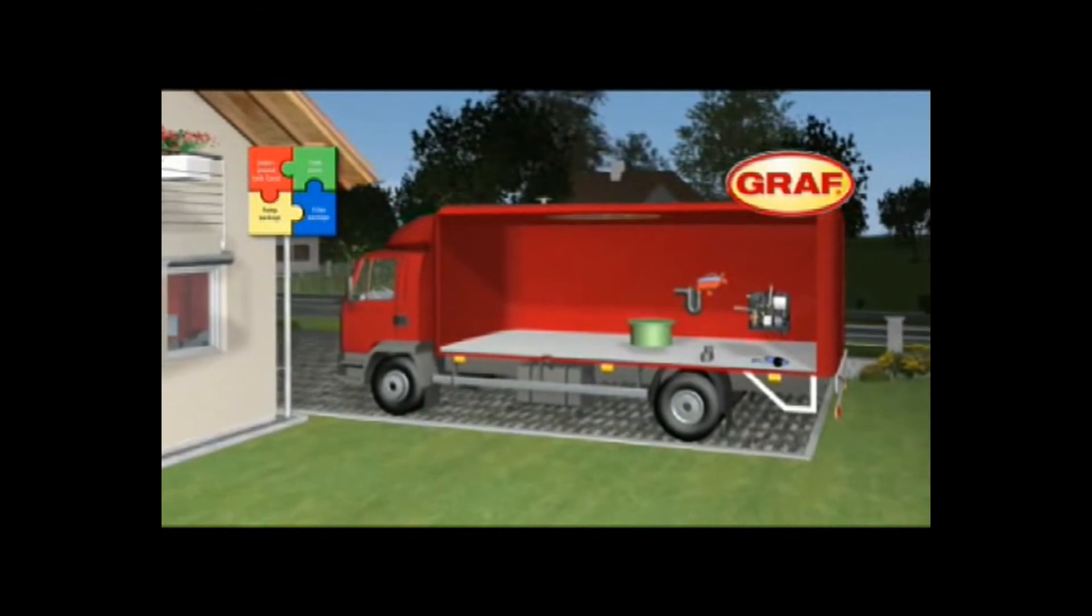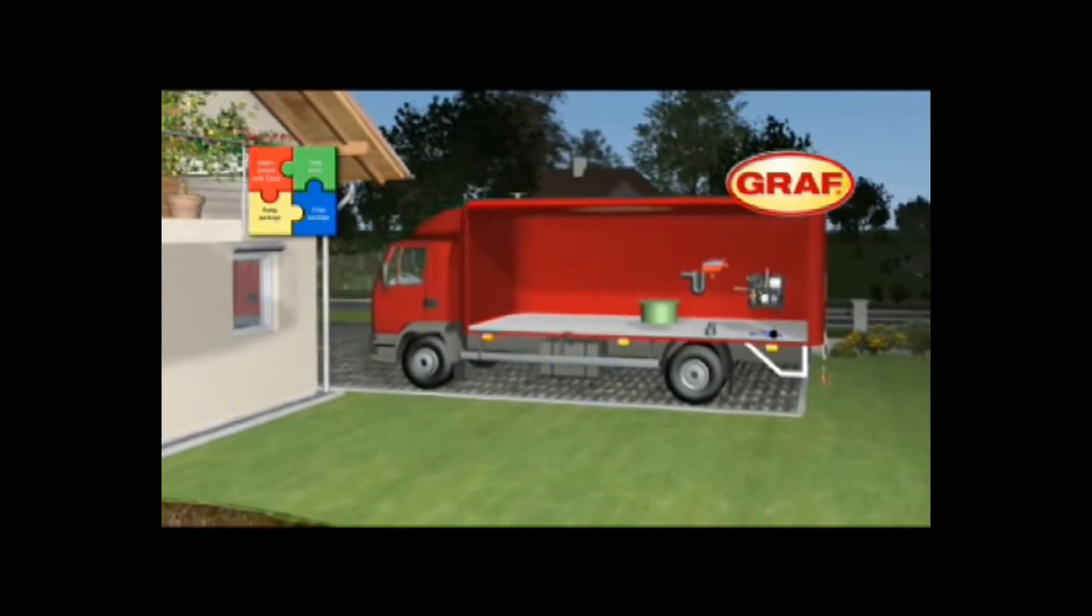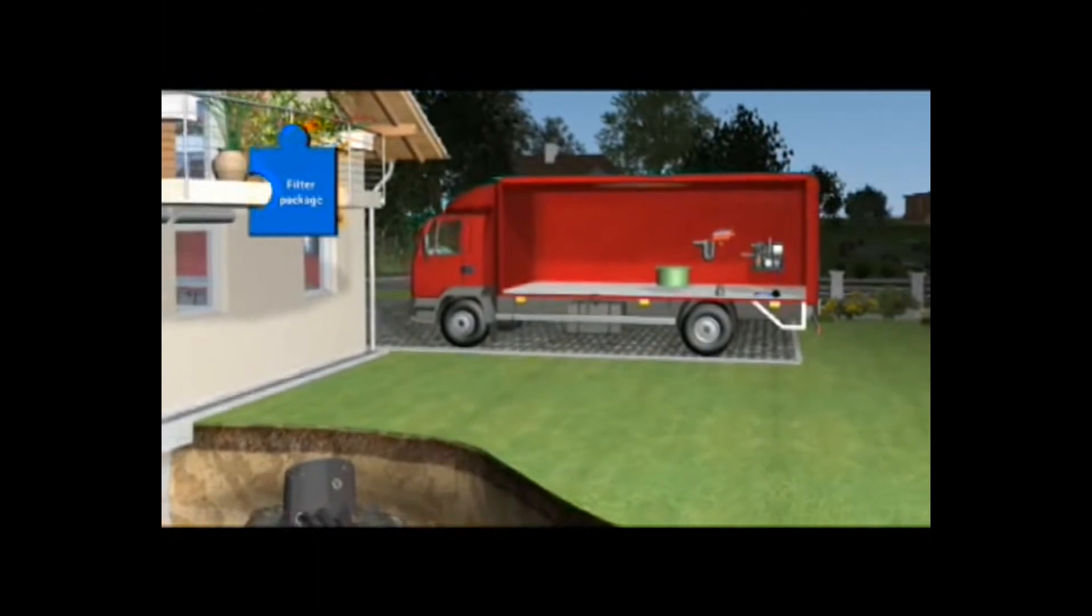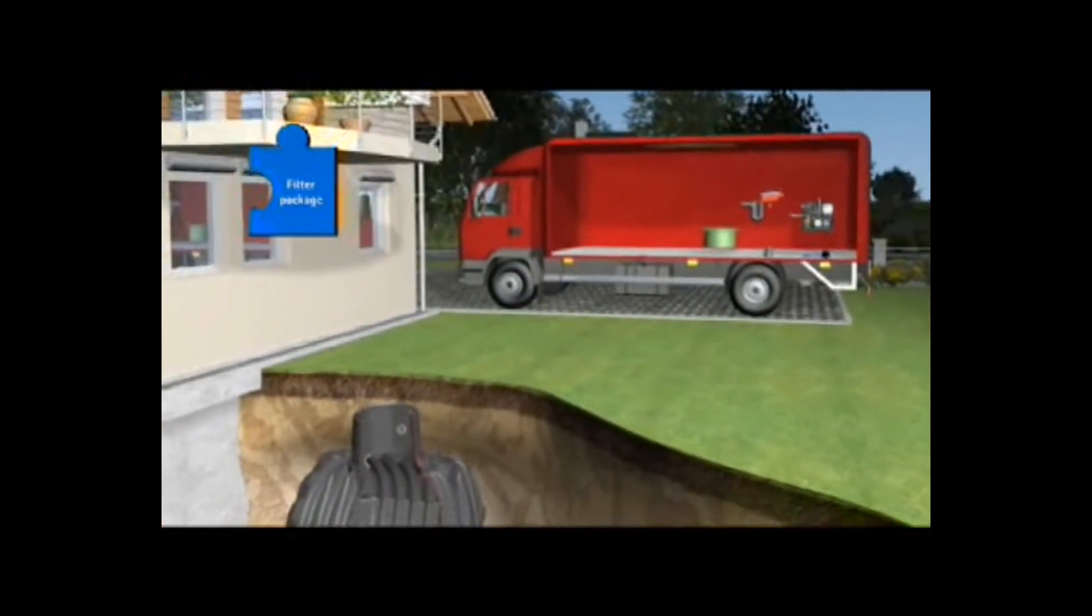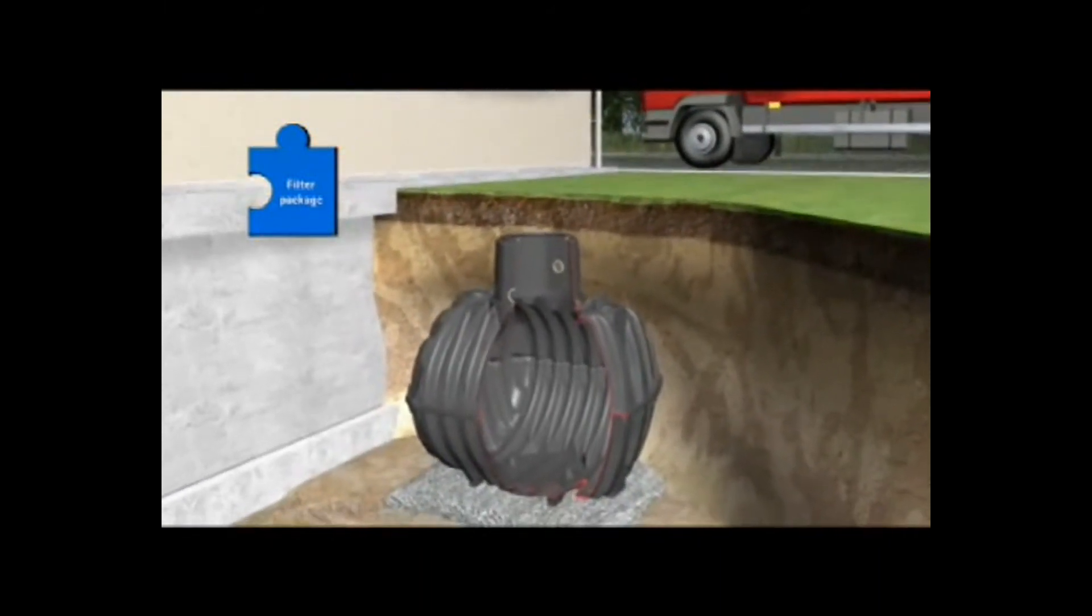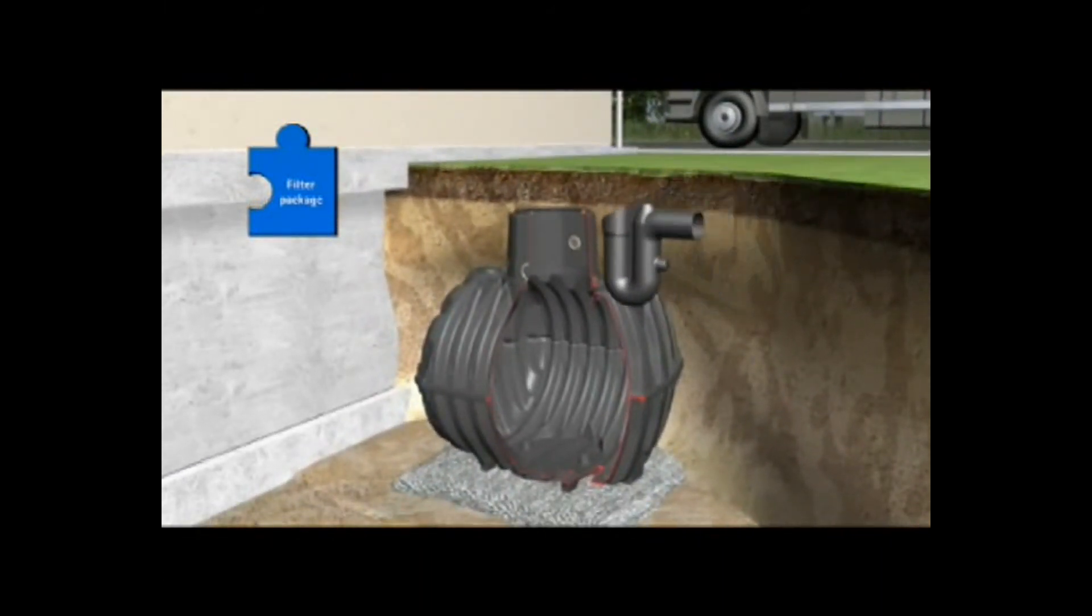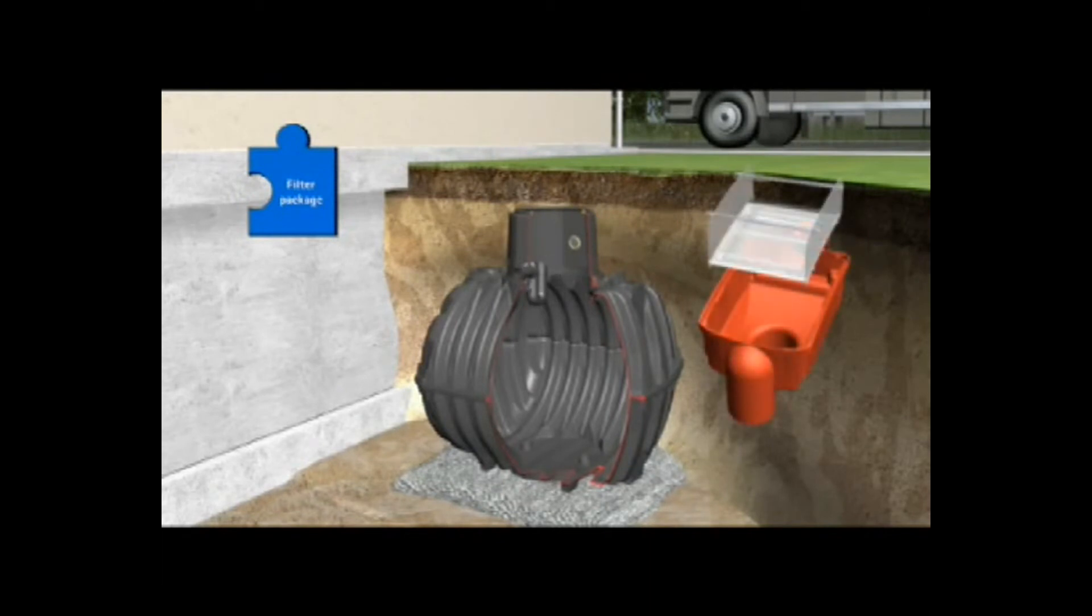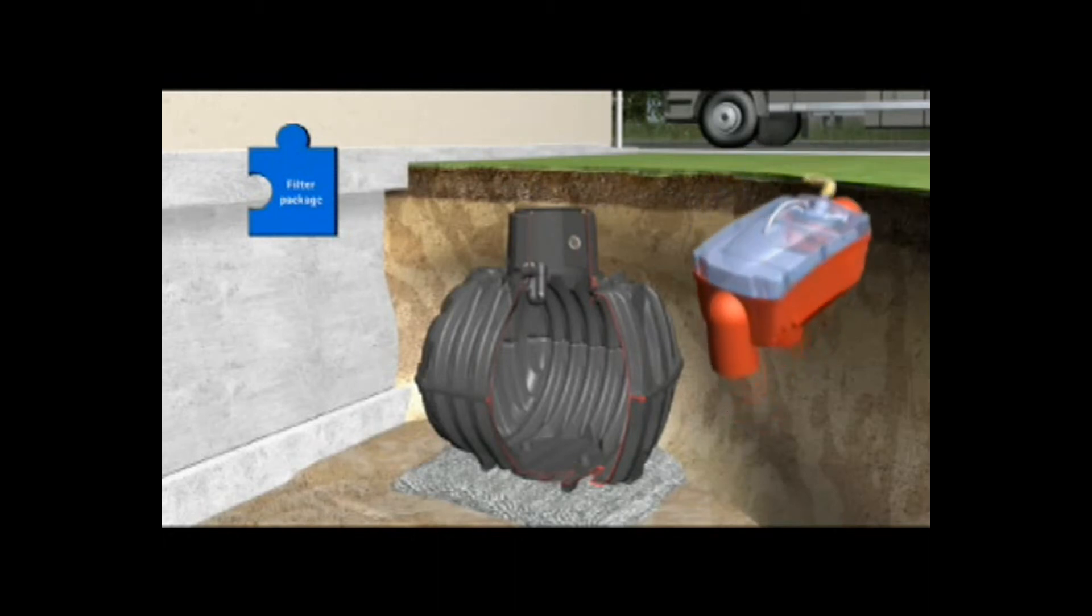Now it is time to install the second component. The filter package includes all the components required for filtration, cleaning and intake of the harvested water. The overflow U-bend with rodent protection. The self-cleaning OptiMax filter with a rainwater yield of up to 95%. The optional jet wash OptiClean. The transparent OptiMax cover for easy filter viewing. And the stilling well.